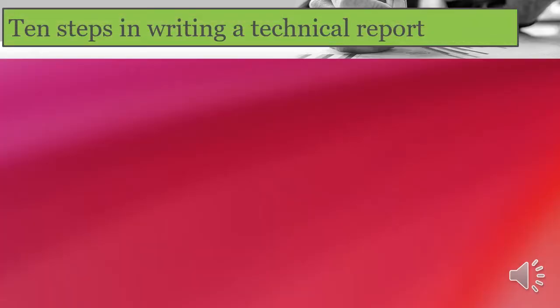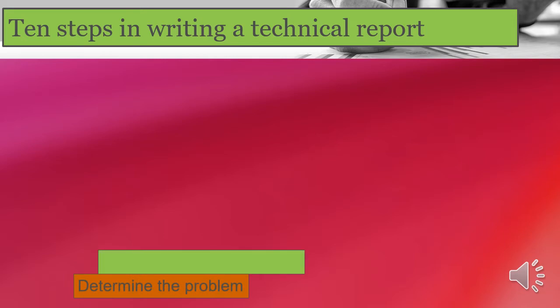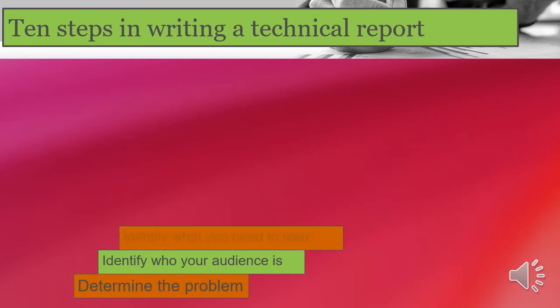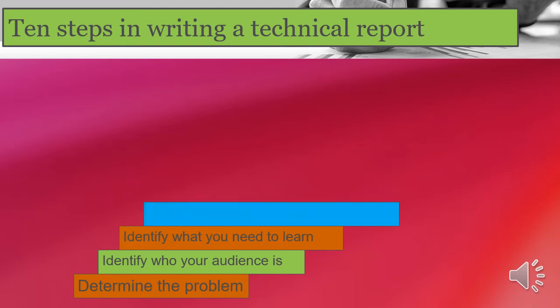There are ten steps in writing a technical report. First, determine the problem. Once your problem is determined, identify who your audience is — in technical writing, your audience should be specific. Next, identify what you need to learn: what is your purpose? Do you want to ask for information or record a certain event or incident? Then, gather necessary information and data. Once you identify your purpose, gather all the necessary information and data before writing the report.